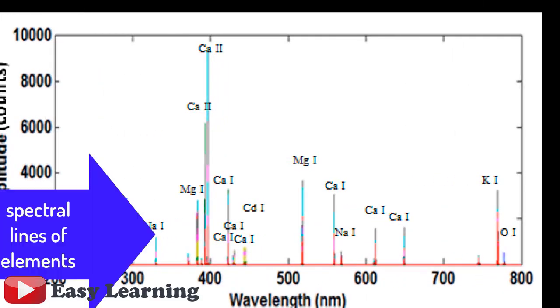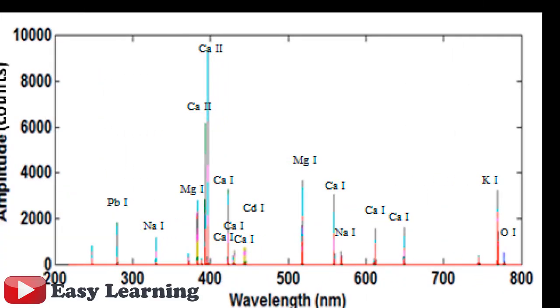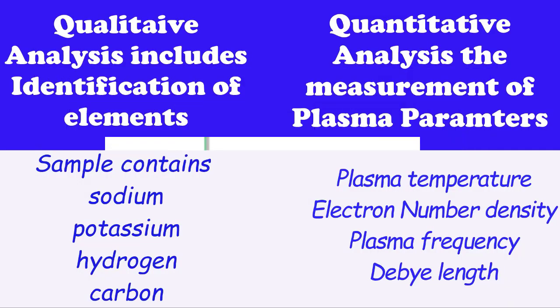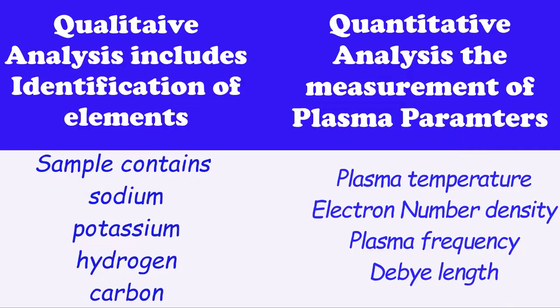Here is a graph of spectral lines of different elements, and this graph is used for qualitative and quantitative analysis. Qualitative analysis includes the identification of elements, and quantitative analysis includes the measurements of plasma parameters like plasma temperature, electron density, velocity, etc.